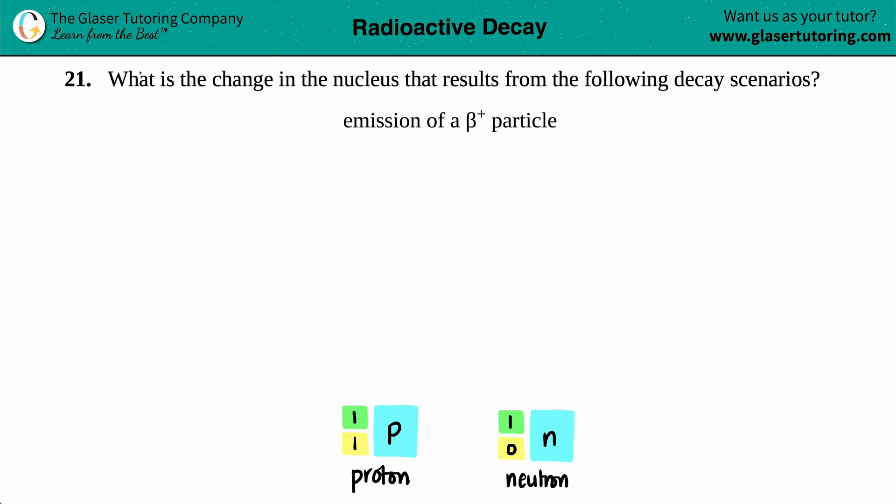Number 21. What is the change in the nucleus that results from the following decay scenarios? And then we have an emission of a beta plus or a positron particle.